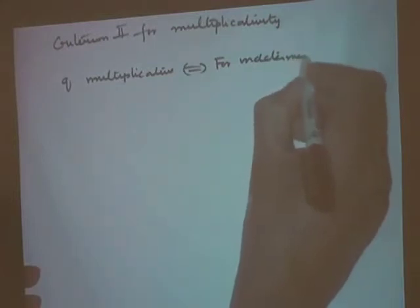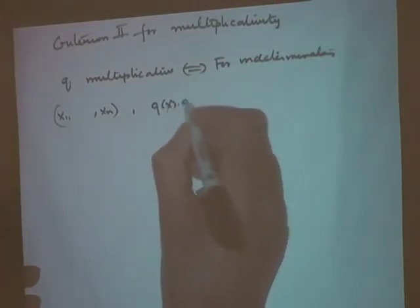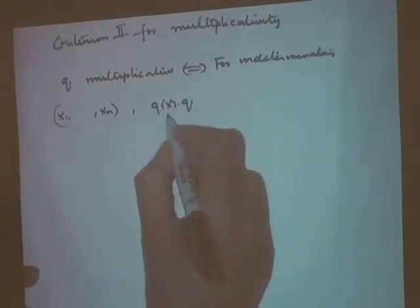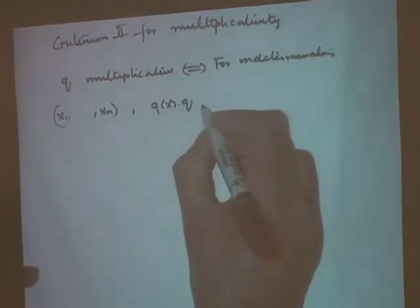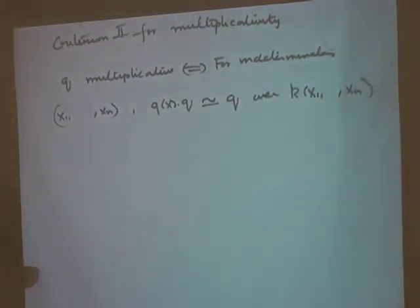Criterion two for multiplicativity: suppose q as before is in n variables. Then q is multiplicative if and only if, for indeterminates x₁,...,xₙ, the scalar q(x) times q is isomorphic to q over the function field k(x₁,...,xₙ). This is another criterion for multiplicativity.